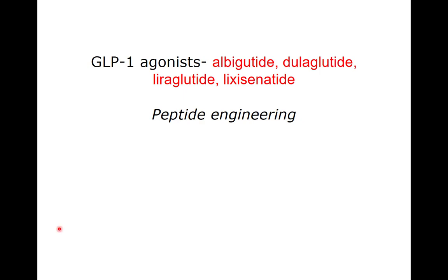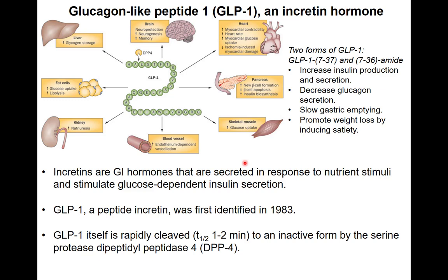GLP-1, which stands for glucagon-like peptide 1, is a human endogenous peptide hormone with an amino acid sequence of 37 or 36 amino acids depending on which form it is. This is an example of what we call an incretin hormone — hormones that are produced in the GI tract and secreted in response to stimuli from nutrients, so they are produced when you start eating.